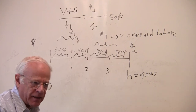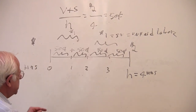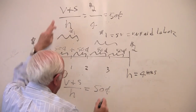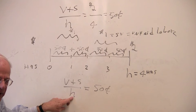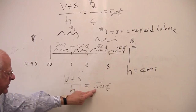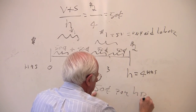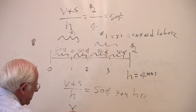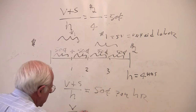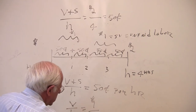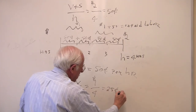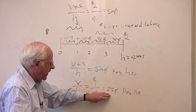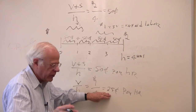On a per-hour basis, the worker produces fifty cents per hour — the use value of labor power yields half a buck per hour. What does the worker get paid per hour? You calculate total wages received divided by hours worked: a dollar divided by four hours equals twenty-five cents per hour. So the worker produces fifty cents per hour and gets paid twenty-five cents per hour — times four hours that adds up to the figures we've seen.